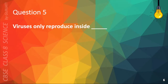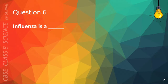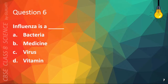Question 5. Viruses only reproduce inside: A. Plastic, B. Host, C. Soil, or D. Metal. The correct answer is B. Host. Question 6. Influenza is: A. Bacteria, B. Medicine, C. Virus, or D. Vitamin. The correct answer is C. Virus.